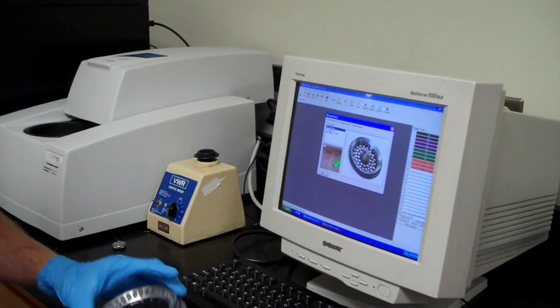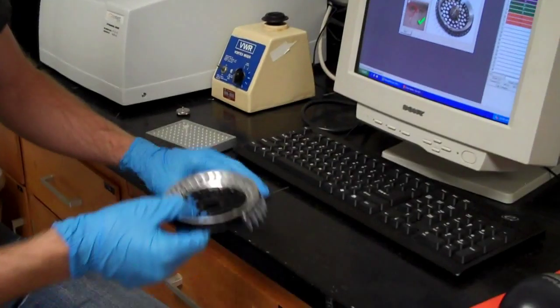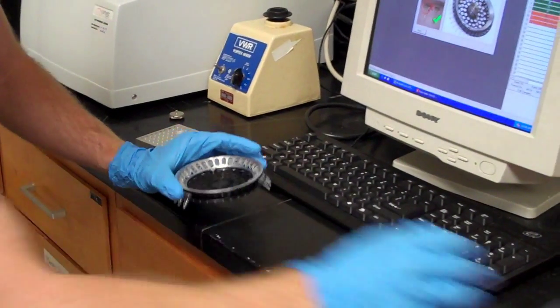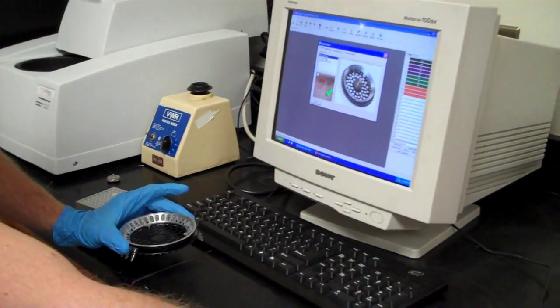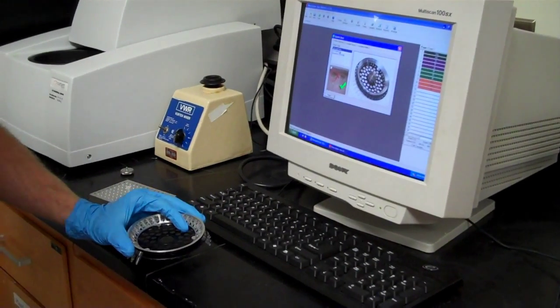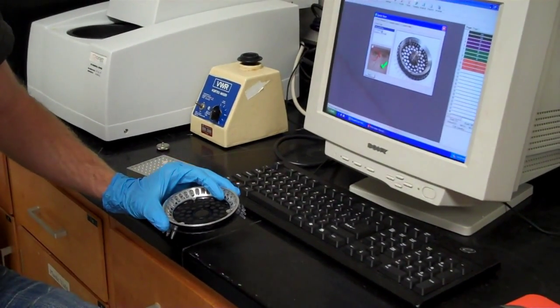Choose the rotor. We have two different rotors. We have a 36-well rotor and a 72-well rotor. Make sure your MCTs do not have domed lids. They must be flat lids.